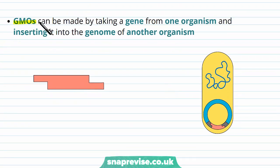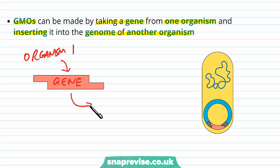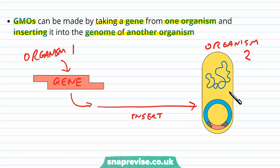Genetically modified organisms can be made by taking a gene from one organism and inserting it into the genome of another organism. For example, organism 1 may have a gene which is desirable for a particular product — this might come from humans or a particular animal — and then we insert this gene into organism 2, which is often a different species such as a bacterium. The gene is inserted into the bacteria's genome, and this bacterium has now become genetically modified.